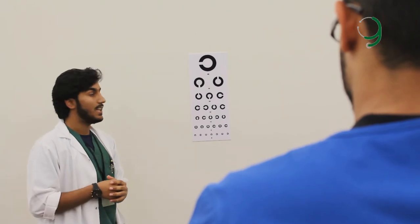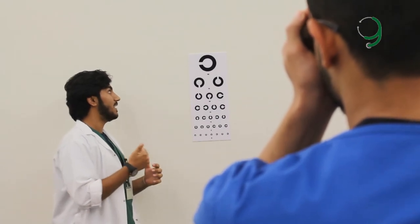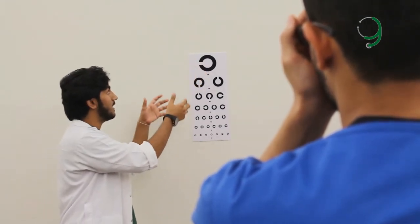Next, you have to alternate the eyes. Tell him to close the other eye and ask him the same thing. And if he couldn't see the first letter, then you have to bring the Snellen chart closer to him until he can see it. If he still can't see the first letter, ask him to count your fingers in front of his eyes. Can you count this? Four. And if he can't, use hand movement. Can you see this? And if he can't, use light perception to see if he can see light.